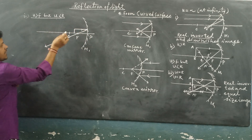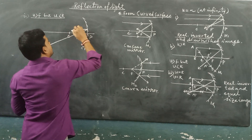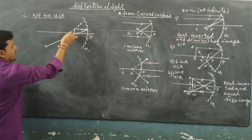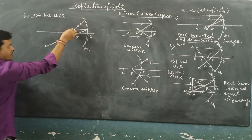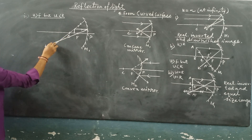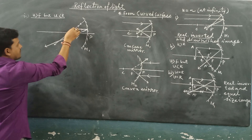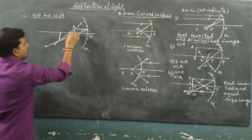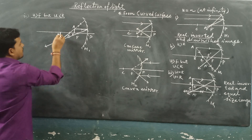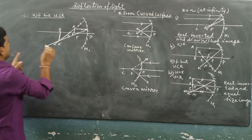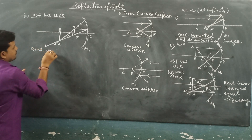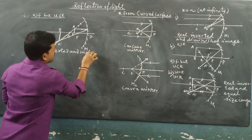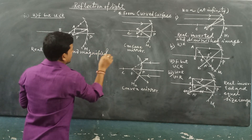Another light ray goes to the center of curvature. Here, these two light rays intersect each other at a point. Where A B is the object, A prime B prime is formed — a real, inverted, and magnified image.